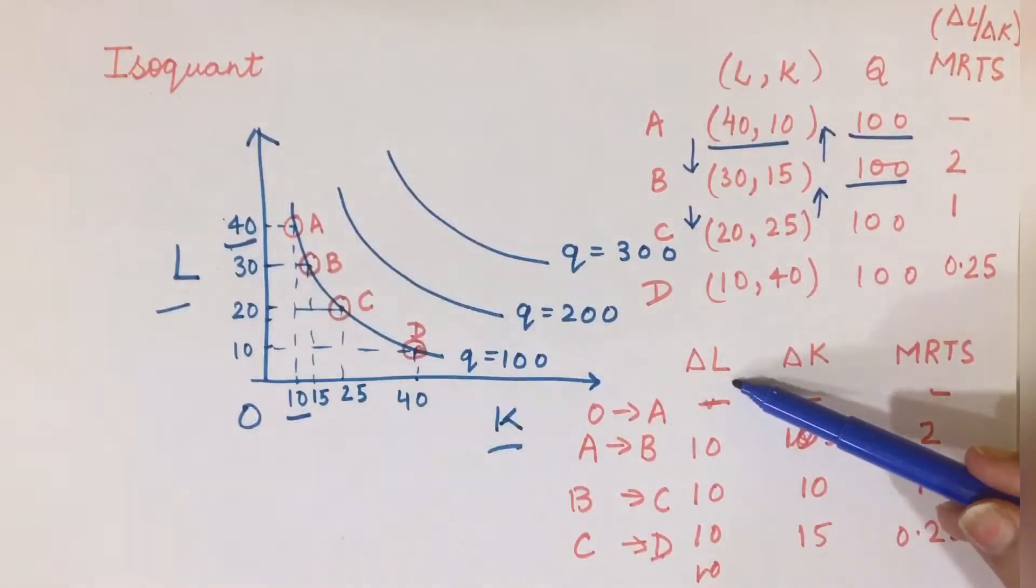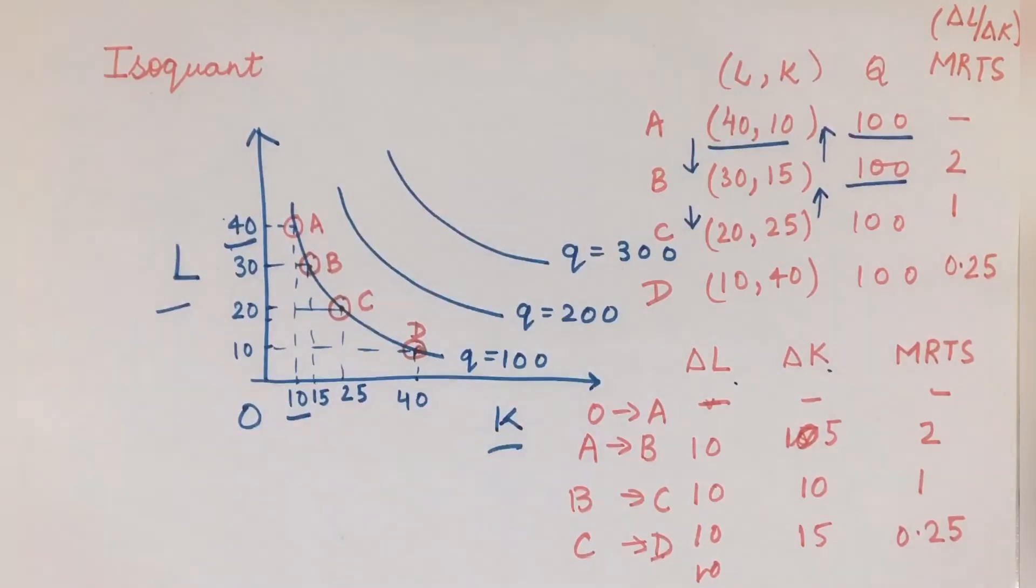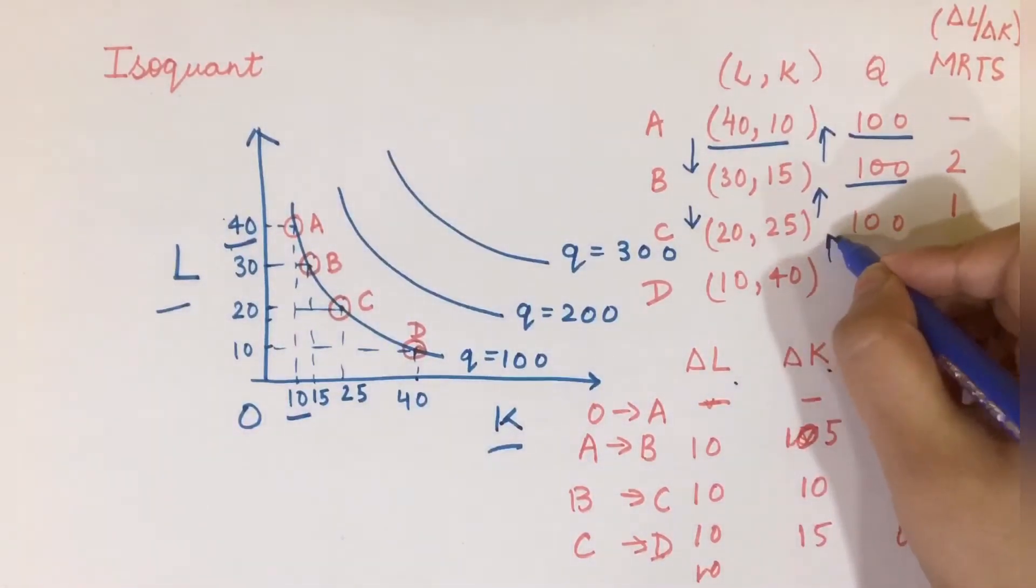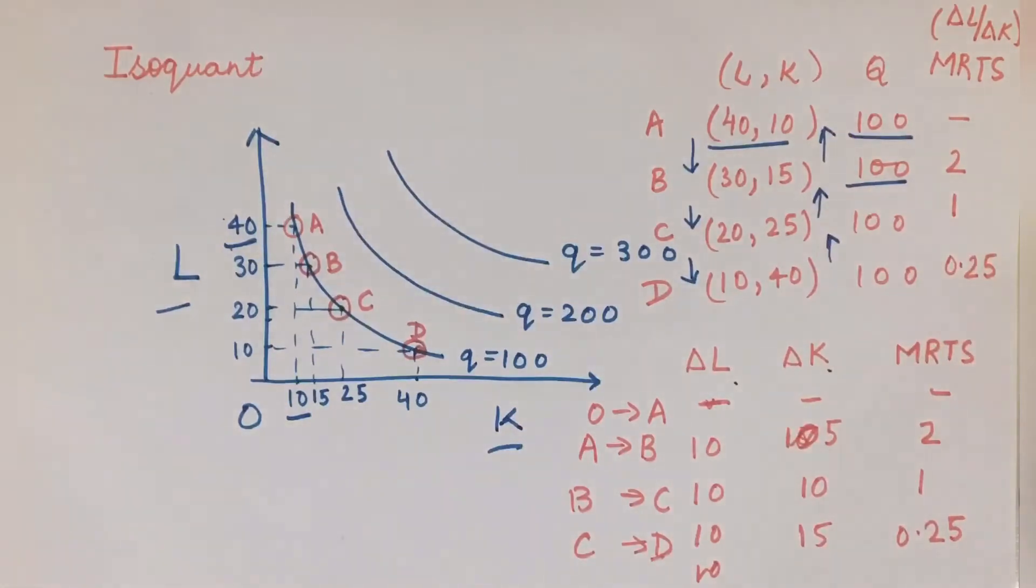Then we come to point D. Now I tell my 10 units of labor, you go away, and I go to the market and buy more units of machines. My capital is again going up and my labor is again going down. What is happening is that 100 units of output is produced using different combinations of labor and capital.